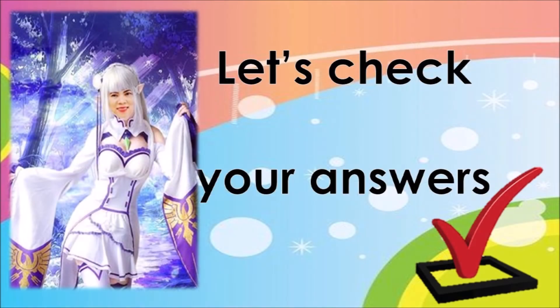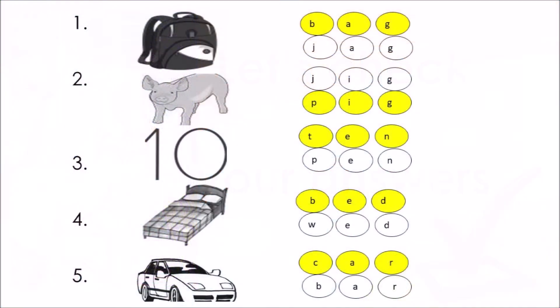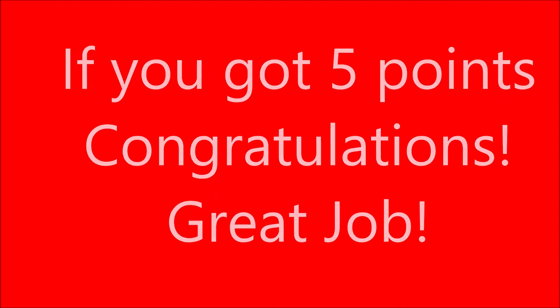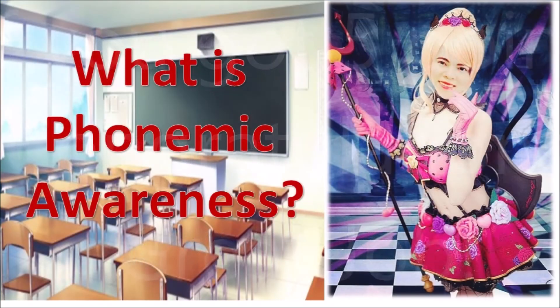Let's check your answers. Number one: the correct answer is bag. Number two: the correct answer is pig. Number three: the correct answer is ten. Number four: the correct answer is bed. Number five: the correct answer is car. If you got five points, congratulations! Great job! Now, let's move on to phonemic awareness.